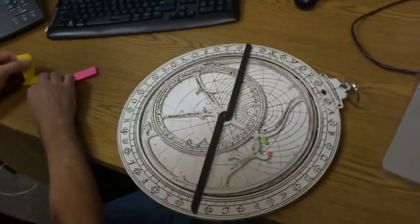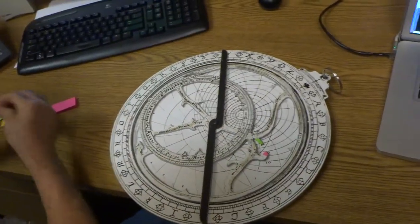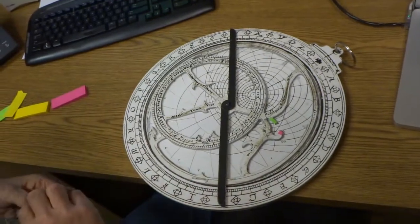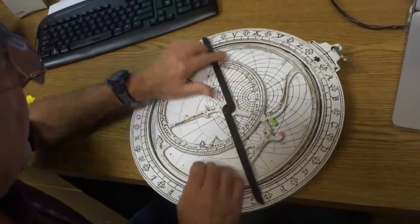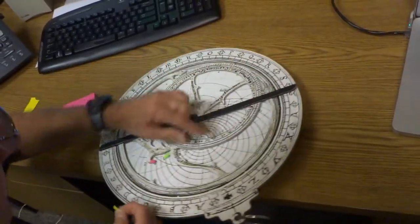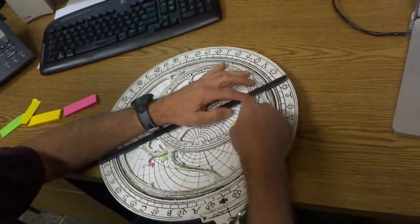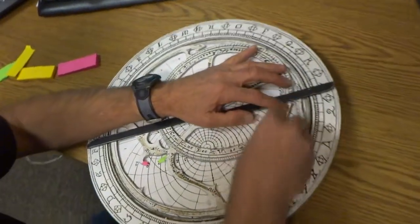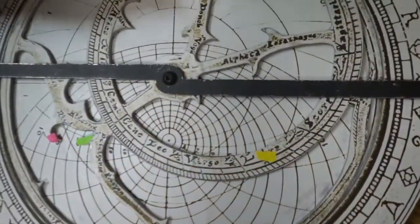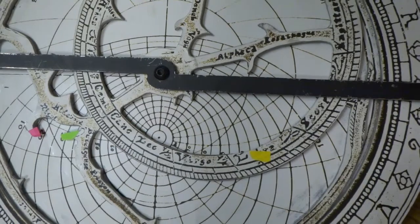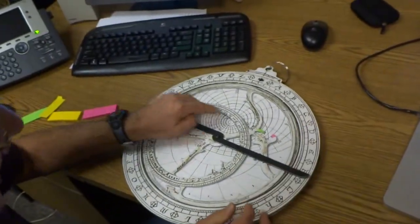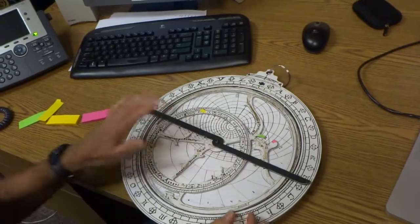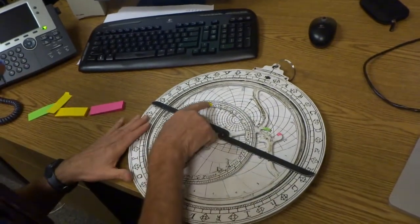But I will put a yellow piece of paper where the sun is on that day. So it's about a third of the way. There's Virgo. It's about a third of the way in Libra. That means that the relationship of the sun and these two stars on that particular day is this.